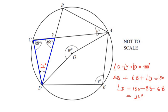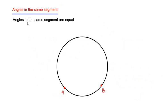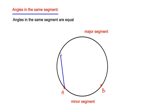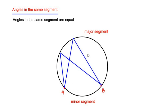To find the value of u, we use the circle theorem known as the angles in the same segment theorem. It states that angles in the same segment are equal. Two points on a circle divide it into a major segment and a minor segment, and all angles drawn in the major segment from those two points are equal — for example, all equal to 20 degrees.